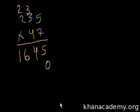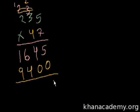Now we add these together: 1,645 plus 9,400. When we add them, we get 11,045. So 235 multiplied by 47 equals 11,045.